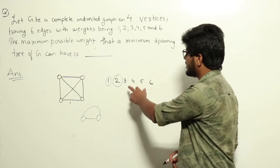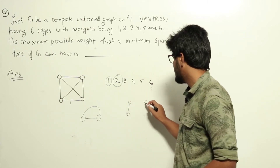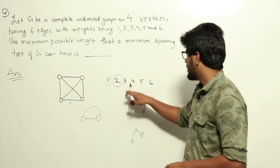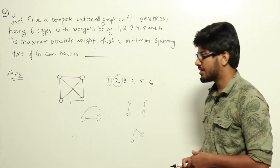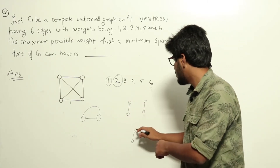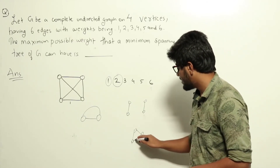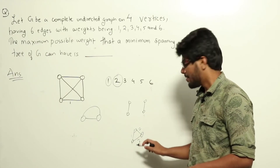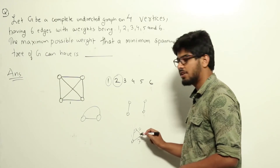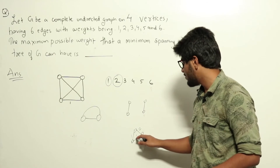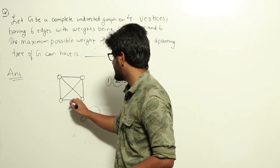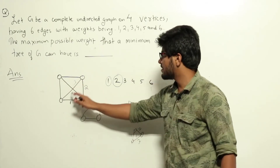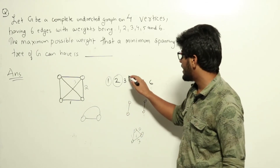Can we avoid edge 3? When edges 1 and 2 are selected, the graph will look like either a path connecting three vertices, or two separate edges. A third edge can be avoided only if it connects two vertices already in the same MST component. If we assign weight 1 to one edge, weight 2 to another edge, and weight 3 to the edge completing the triangle among those three vertices, then edge 3 forms a cycle and is skipped by Kruskal's algorithm. So we can avoid edge 3 this way.